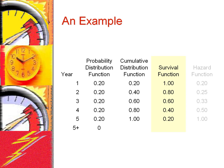The survival function is 1 minus the prior year's cumulative distribution. The probability of surviving until the start of year 1 is 1. The probability of surviving until the start of year 2 is 0.8, and the probability of surviving until the start of year 5 is 0.20. Note that the survival probability — the chances that the prosthesis will not fail — decreases with time.